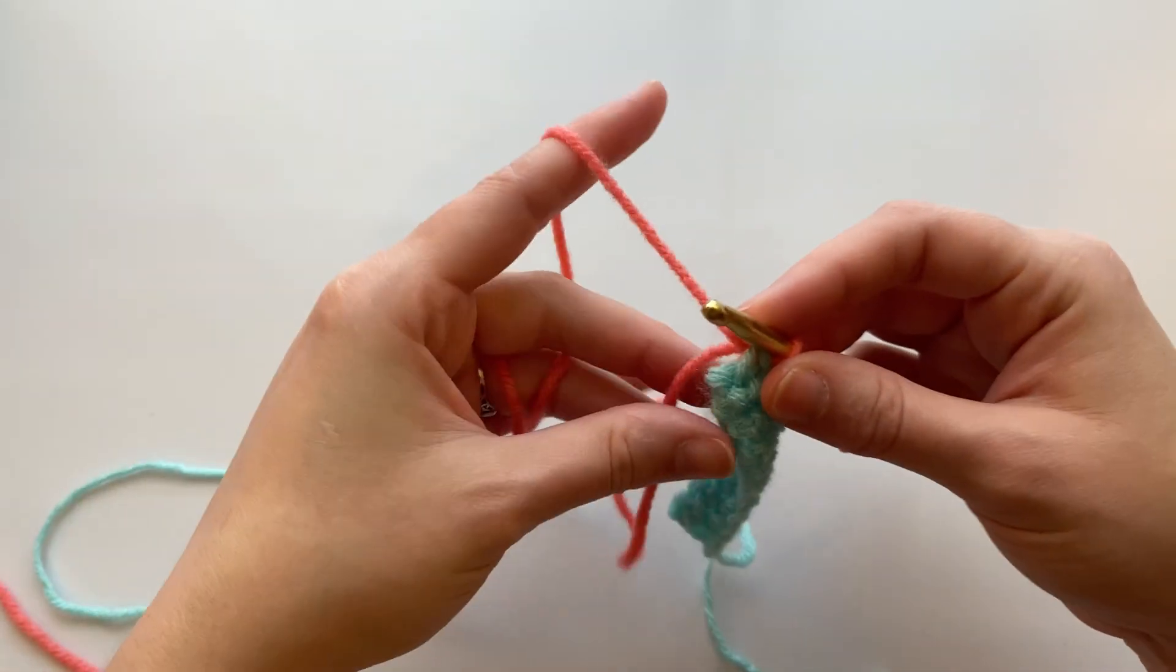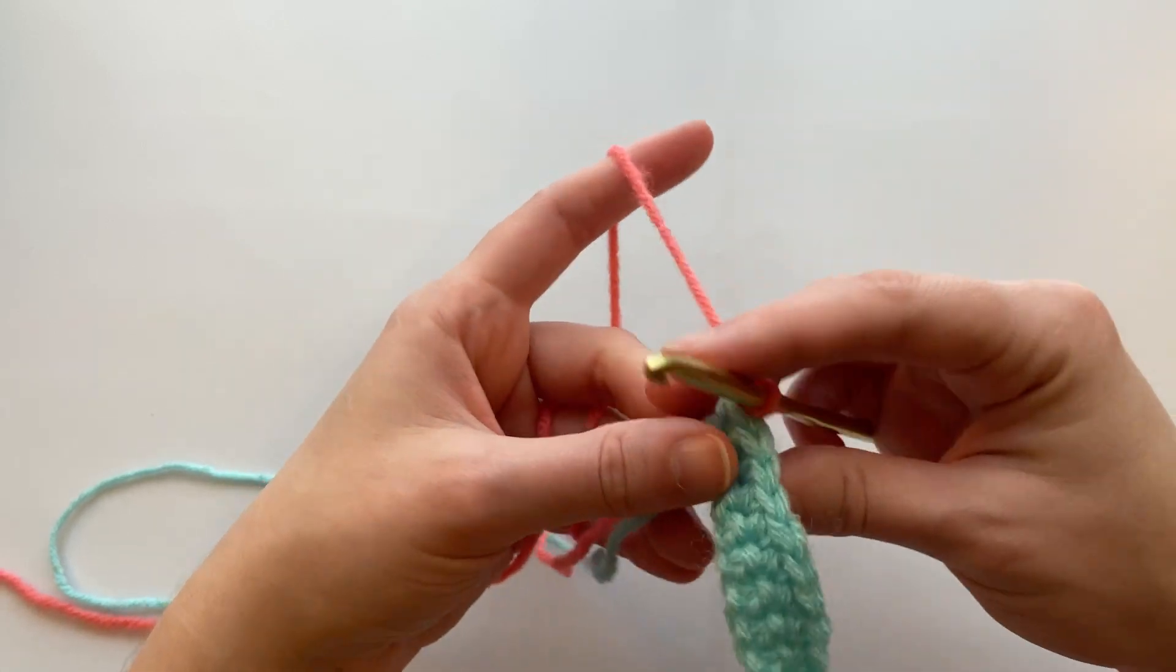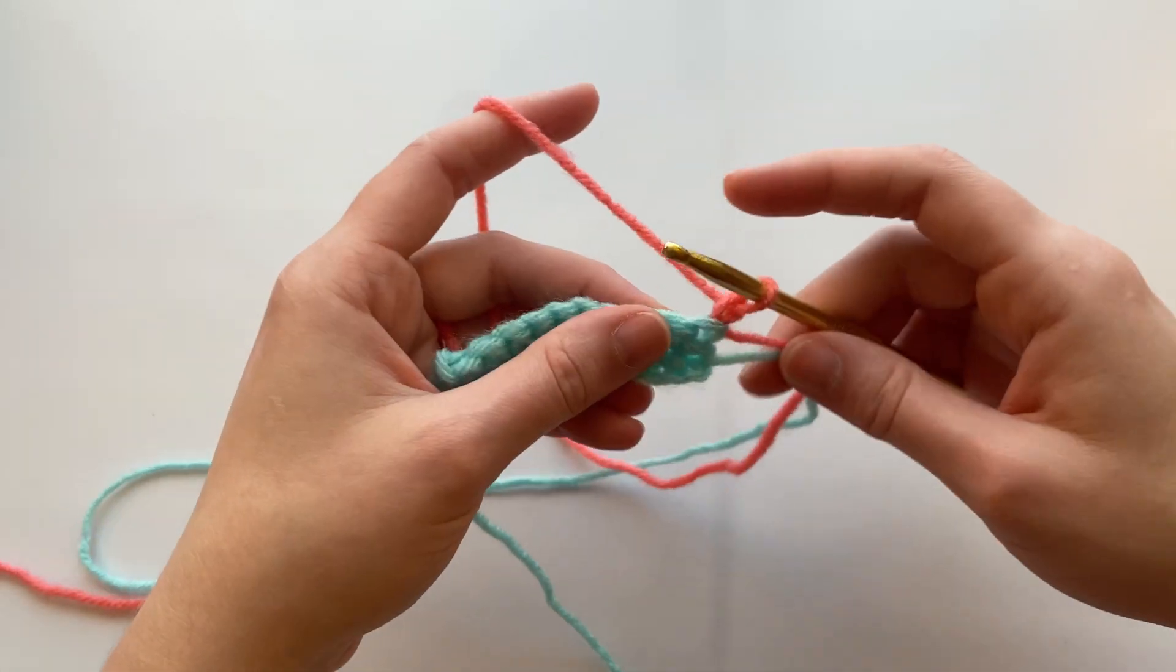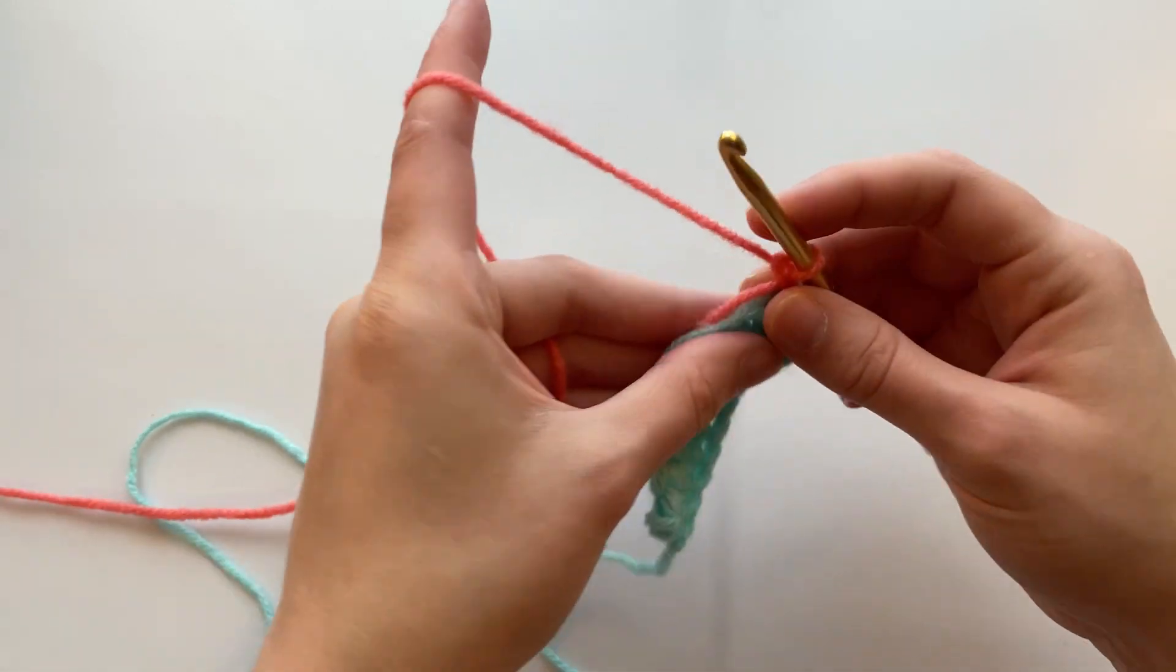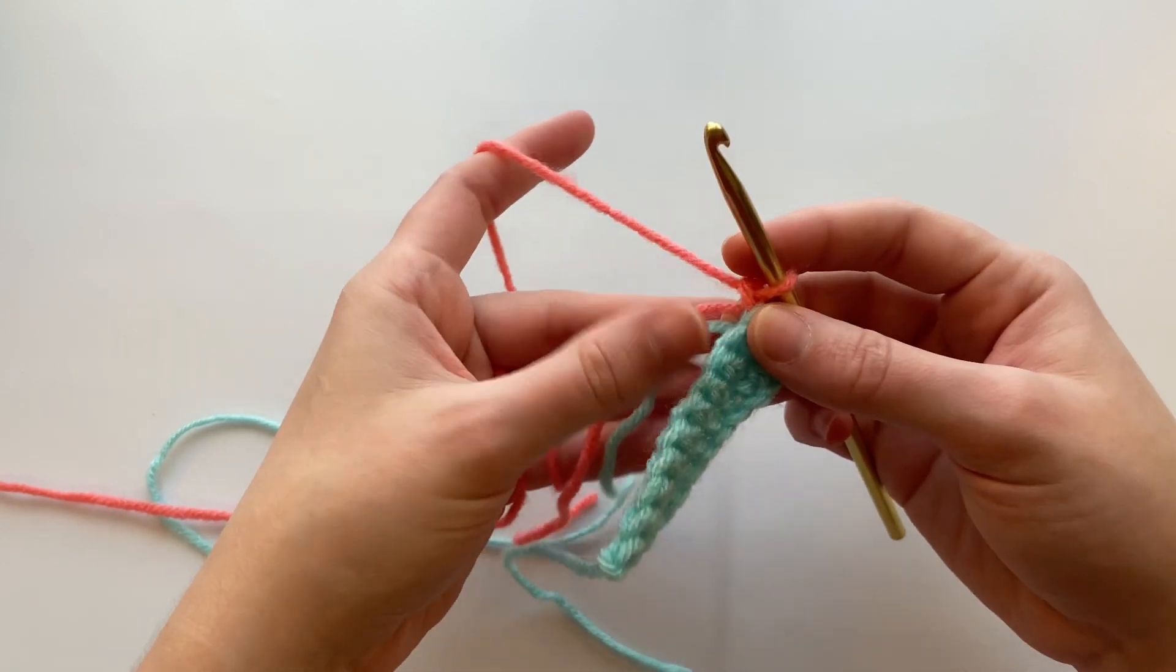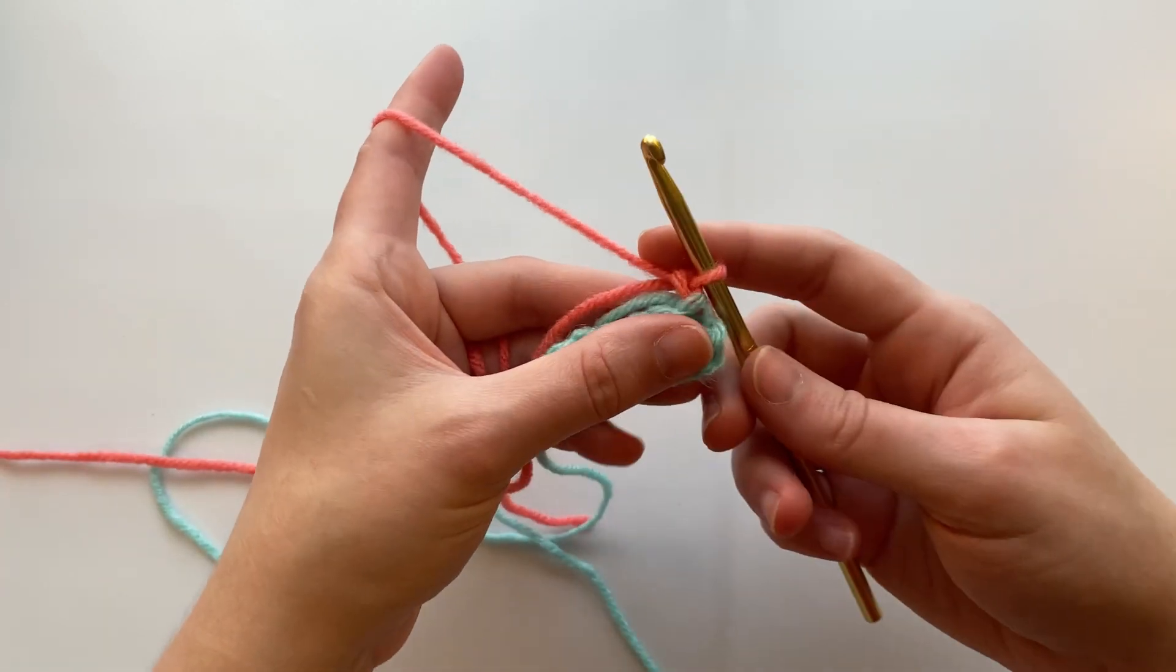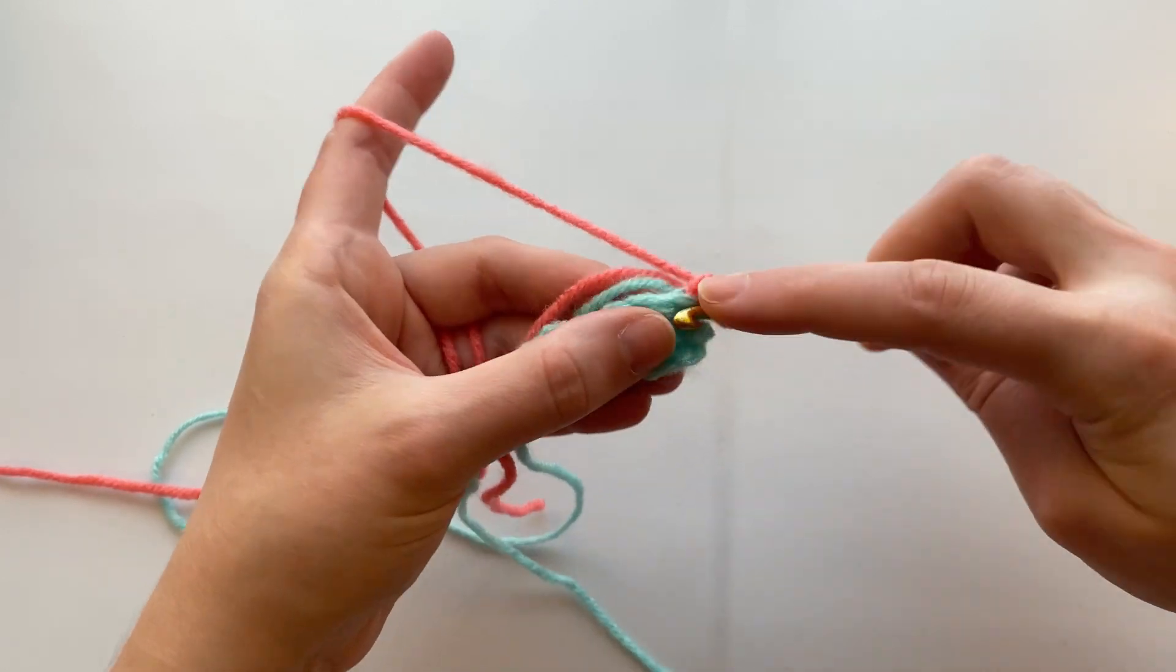And chain one with that new color. And then if you would like, you can also pull these up and crochet over them so you don't have to weave them in later, or you can leave them out and weave them in. I like to do as little work as possible so I'm going to go ahead and crochet over them.